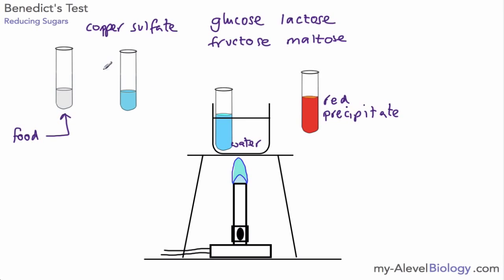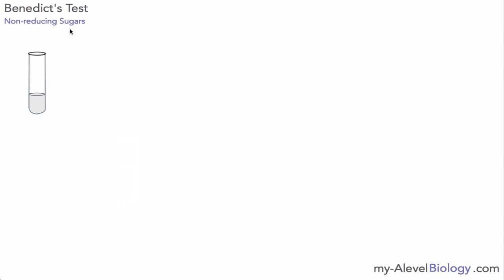So that's the way we use the Benedict's test to test for reducing sugars. Now on some occasions you might see that this is left in the water bath for a few minutes but it doesn't actually change color. That actually means we don't have any reducing sugar present, but it doesn't mean we have no sugar present. We may have what's called a non-reducing sugar.